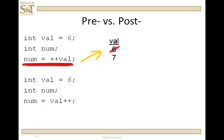Well, in this case, the first thing that happens is that val gets incremented. Okay, so val, it started out as six, it's now seven. Num, it gets assigned seven. So after the execution of this statement, the values of both num and val are seven.